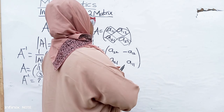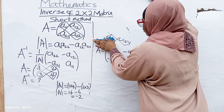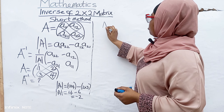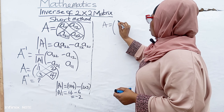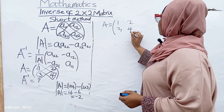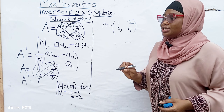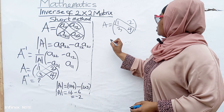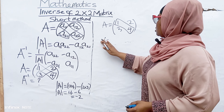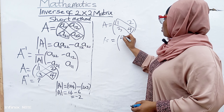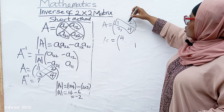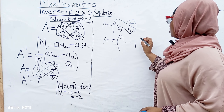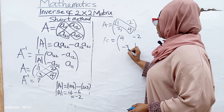After getting your determinant, write matrix A back: 1, 2, 3, 4. Now interchange the elements in the leading diagonal, so 4 and 1 swap. Then put a negative sign on those in the second diagonal, giving minus 2 and minus 3.